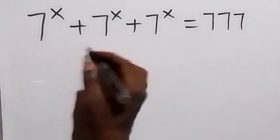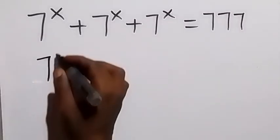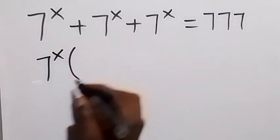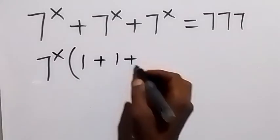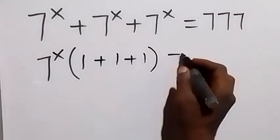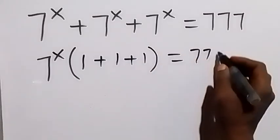From here, we can factor 7 raised to the power x out and this will become 7 raised to the power x into bracket 1 plus 1 plus 1 then equals to 777.